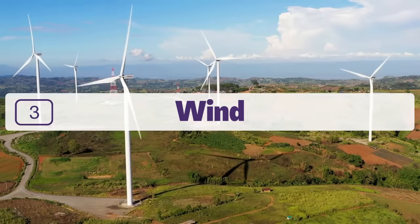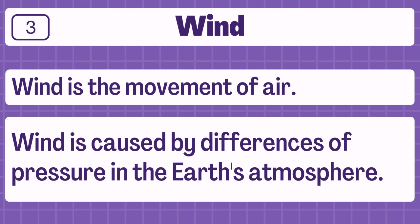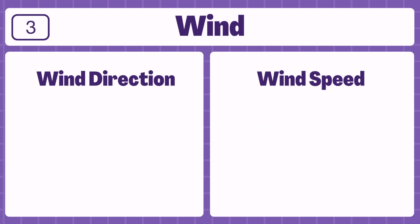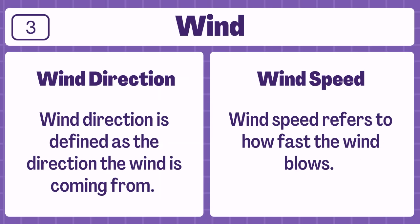Number three: wind. Wind is the movement of air. Wind is caused by differences of pressure in the Earth's atmosphere. Wind is described by using two main measurements — direction and speed. Wind direction is defined as the direction the wind is coming from, while wind speed refers to how fast the wind blows.